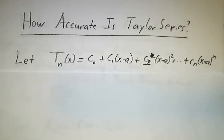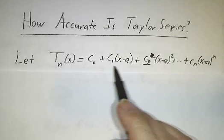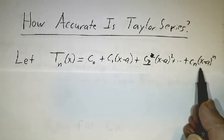It's not going to give you the exact answer because you need infinitely many terms to get the exact answer. How big of an error do you have if you only take n terms? So a little terminology. We're going to let Tn be the first n terms of the Taylor series of a function.